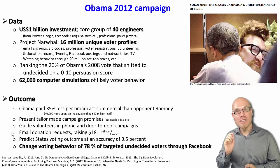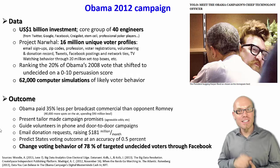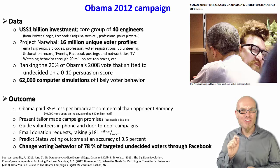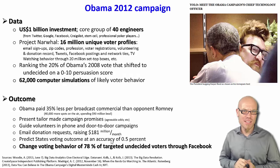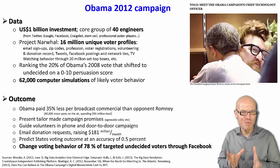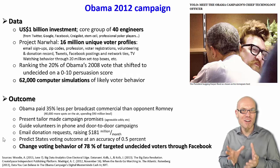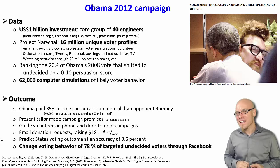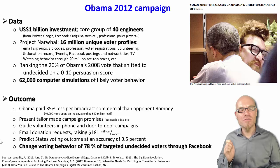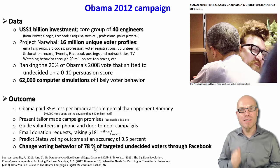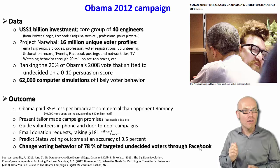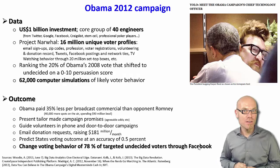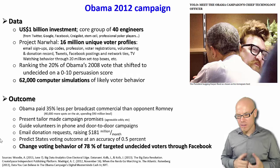They could predict states' voting outcomes with an accuracy of 0.5%, meaning the Obama campaign was pretty sure they had won even before the election. Most impressively, they changed the voting behavior of almost 80% of targeted undecided voters — only through Facebook.